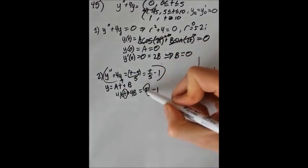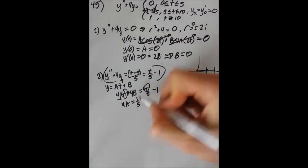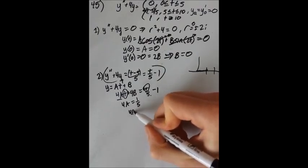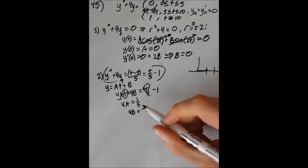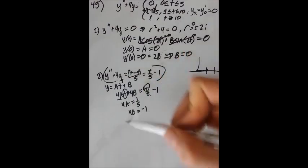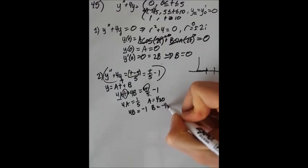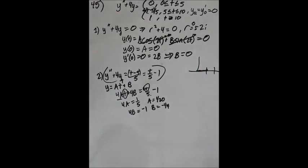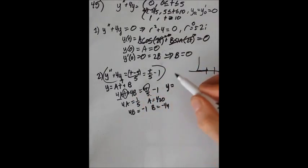So equating powers, this is t to the first and this is t to the first. We see that 4a equals 1 fifth. And we also see that 4b equals minus 1. So we can see that each of these is just 1 fourth the value over here. That should be obvious because we see the 4 over here that cancels the 1 fourth. So a is 1 20th and b equals minus 1 fourth. So our equation in this region is now y equals, this is for region 2, t over 20 minus 1 fourth.